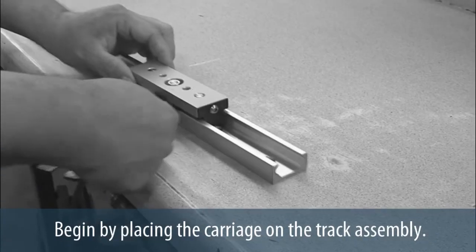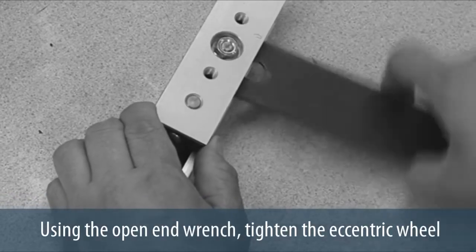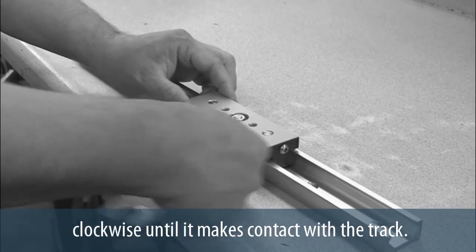Begin by placing the carriage on the track assembly. Using the open end wrench, tighten the eccentric wheel clockwise until it makes contact with the track.